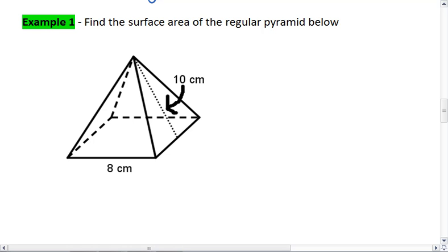In example 1, we're going to find the surface area of the regular pyramid below. It's regular, so that means I have a regular base. And the area of this base is going to be 8 squared, which is 64.